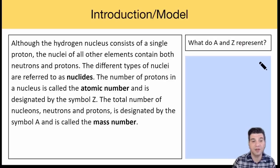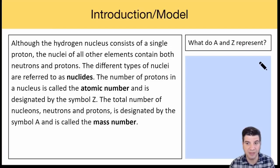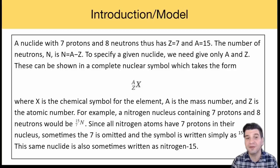Although the hydrogen nucleus consists of a single proton, the nuclei of all other elements contain both neutrons and protons. The different types of nuclei are referred to as nuclides. The number of protons in a nucleus is called the atomic number and is designated by the symbol Z. The total number of nucleons, neutrons and protons, is designated by the symbol A and is called the mass number. What do A and Z represent? Pause the video, fill this in.